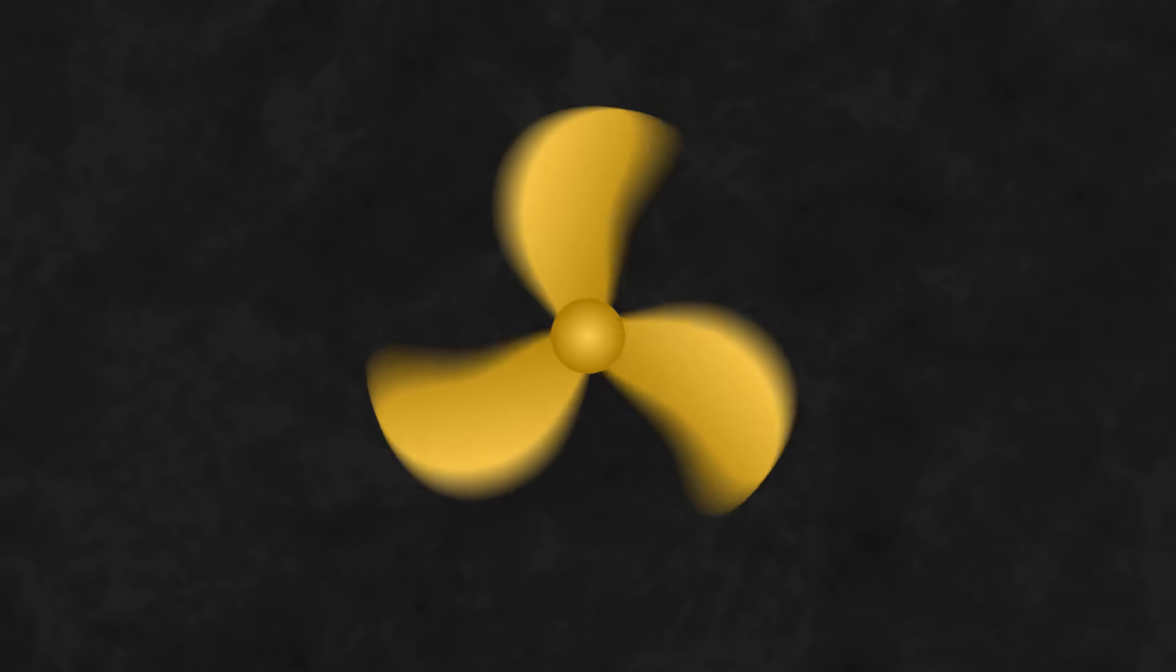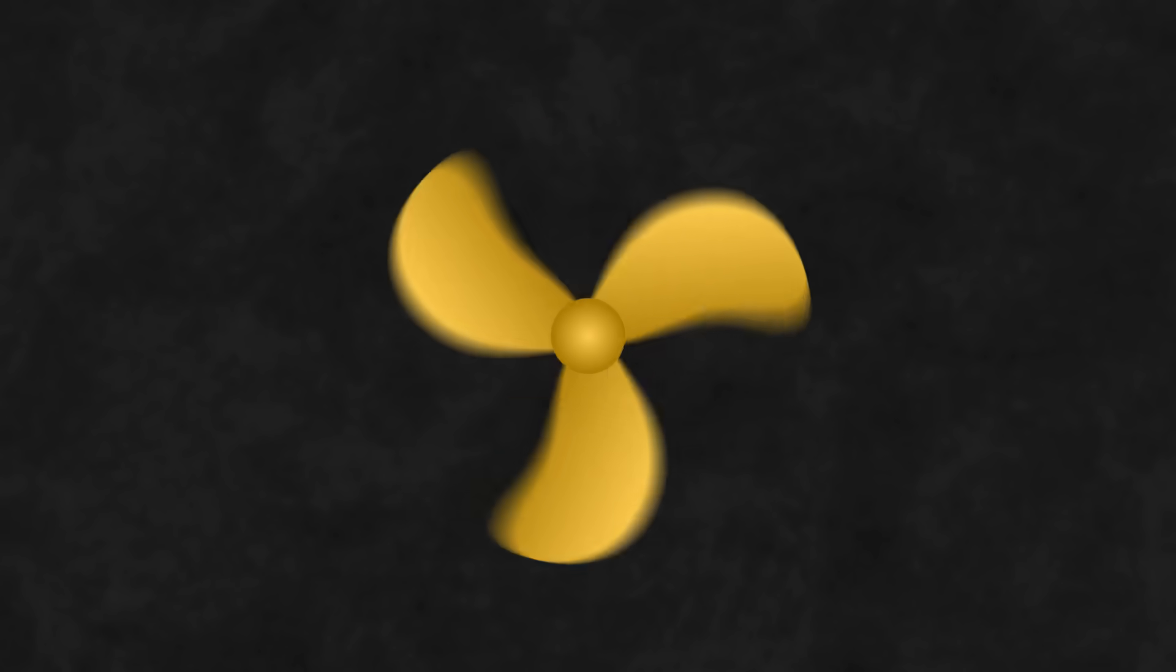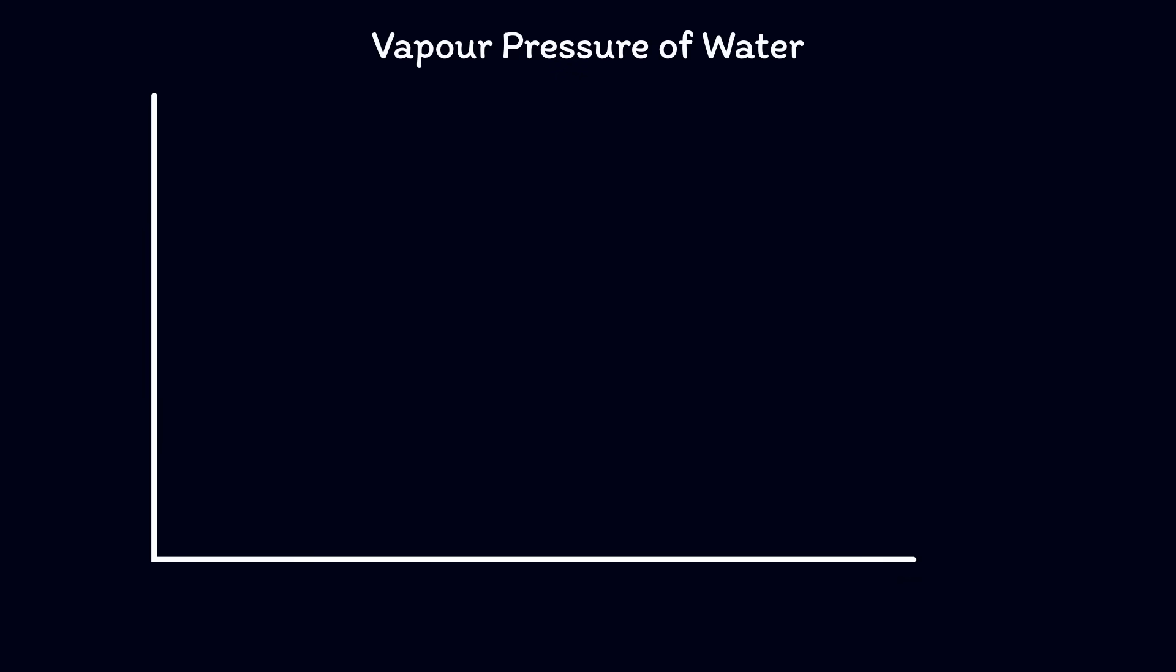And then we get to the real limitation with high-speed props: cavitation. Cavitation is the process where the lower pressure water behind the blades evaporates and creates vapor pockets. Remember, low pressure means evaporation happens at low temperatures, so you drop the pressure low enough, and it's going to evaporate at sea temperature.